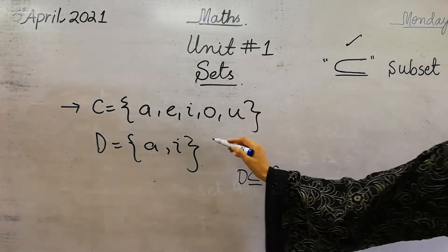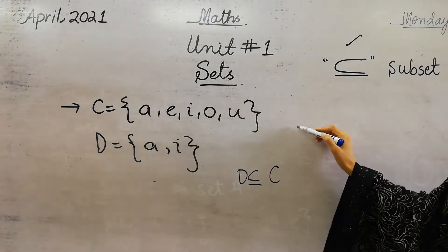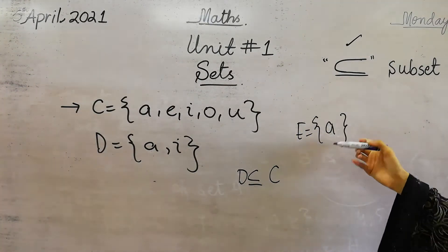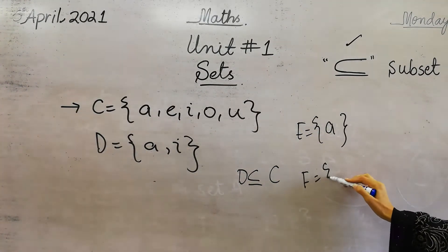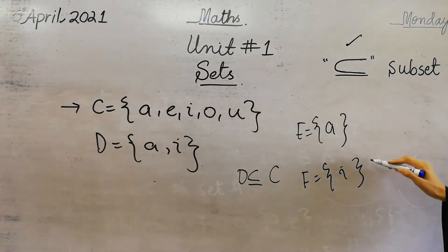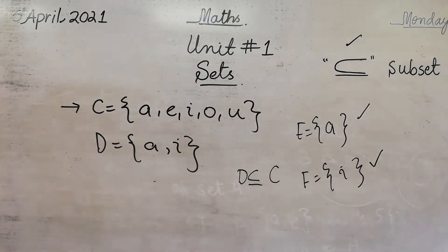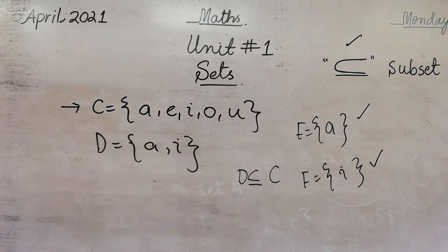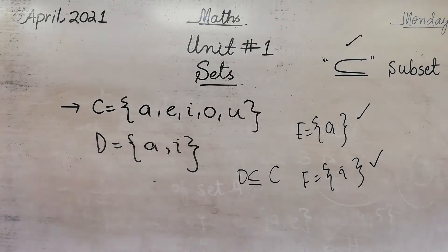You can write other subsets too — for example, E = {A} is also a subset of C, or {I} is also a subset. This contains only one element, so this is a singleton set. When you write subsets, you will also get the empty set, singleton sets, and the full set itself.